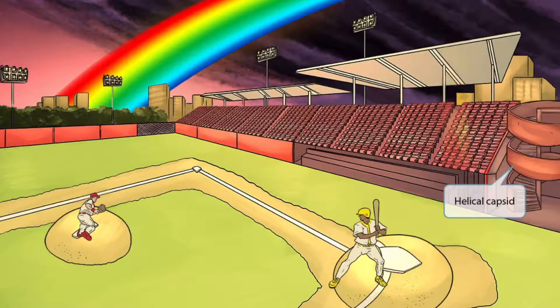If you look towards the right side of the image, you can see that we've added a helical shaped staircase for people to access the field. This shape should help you remember that arena viruses have a helical capsid.